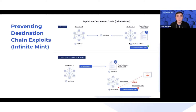In the case of an infinite mint, the derivative or wrapped token has a supply increase greater than what is correspondingly locked up on the source chain. If you're using proof of reserve, you can verify that the token supply is now greater than what is locked up, and you can perform whatever preventative actions you need.